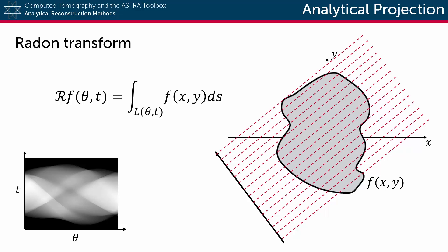If you consider the output of this transform in a coordinate system on θ and t, then you get the full representation of the object function in what is called the projection domain. This is also called the sinogram of the function.